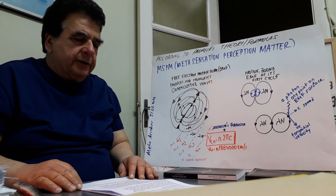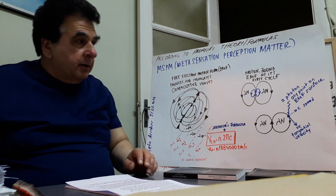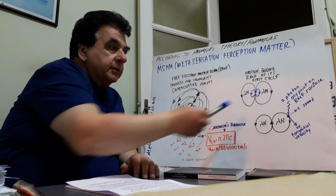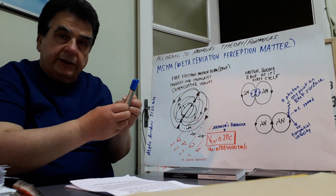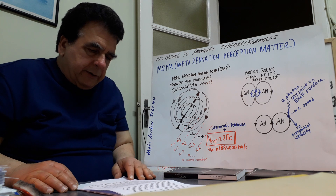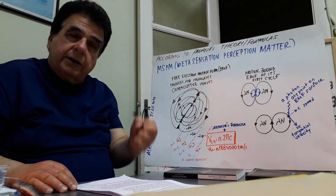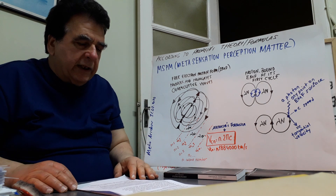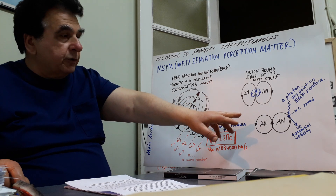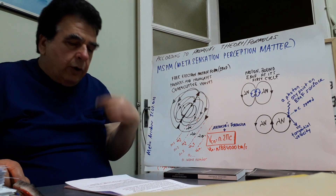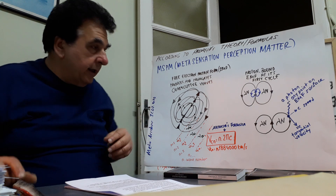If an electron motion form makes a joint motion with a proton — the blue cycle is the proton, the black cycle is the electron motion form, intertwined again — it cannot produce and propagate successive waves. This is a proton-bound electron motion form, and it goes on cycling always at its first cycle, N equals 1, in an atom.